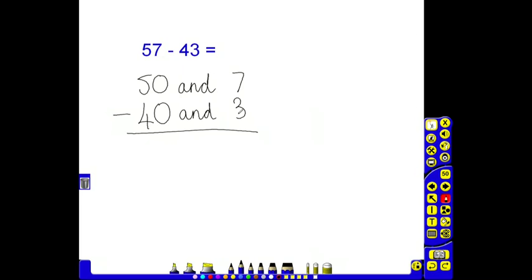50 and 7 take away 40 and 3. It's then very important to recognize: can I take my tens away? Of course I can, because this is a smaller number. Can I take my units away? This isn't always possible, it is here, so this is a nice straightforward answer. 50 take away 40 is 10, and 7 take away 3 is 4. I know that 10 and 4 together make 14, so my answer is 14.